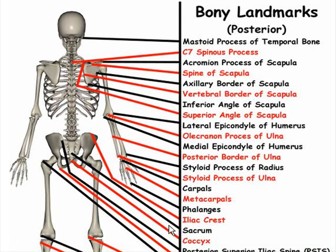Posterior bony landmarks. First one: mastoid process of the temporal bone, right here. C7 spinous process — this is the one you can feel more in the neck.